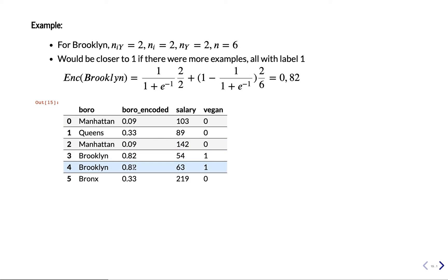And this will yield these values. For instance, if you have Brooklyn here, we have, so NY_i is two because we have two examples where we have Brooklyn and vegan is one. The total number of cases where you have Brooklyn is also two. The total number of vegans is also two.